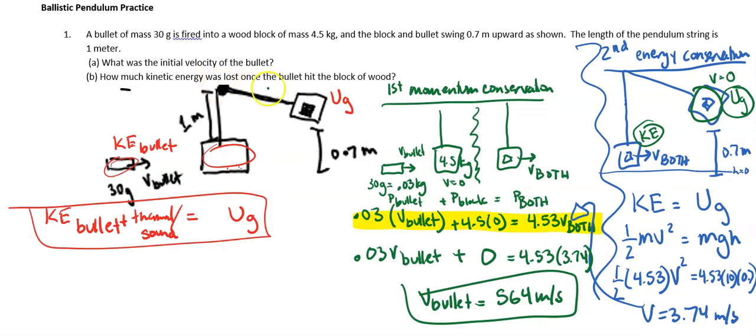Let's go ahead and look at b. So how much kinetic energy is lost once the bullet hits the block of wood? Okay. So in order to do that, it looks like we're going to have to find the initial kinetic energy of the bullet. So KE initial of the bullet. It's just going to be what?